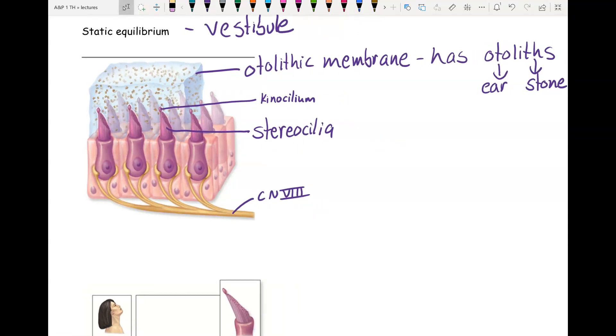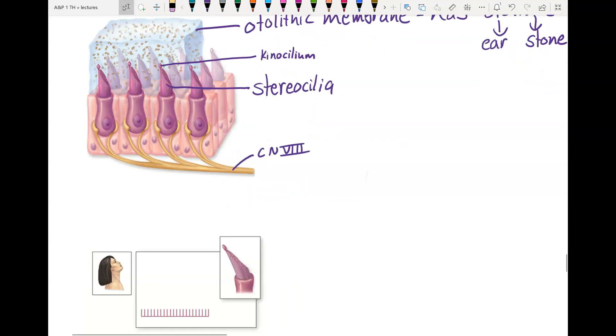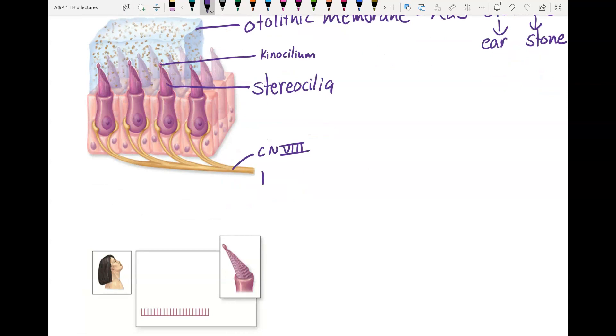These cells constantly send signals to your brain. So this is tonic. It constantly signals the brain, so you always know where gravity is. But it changes its rate.